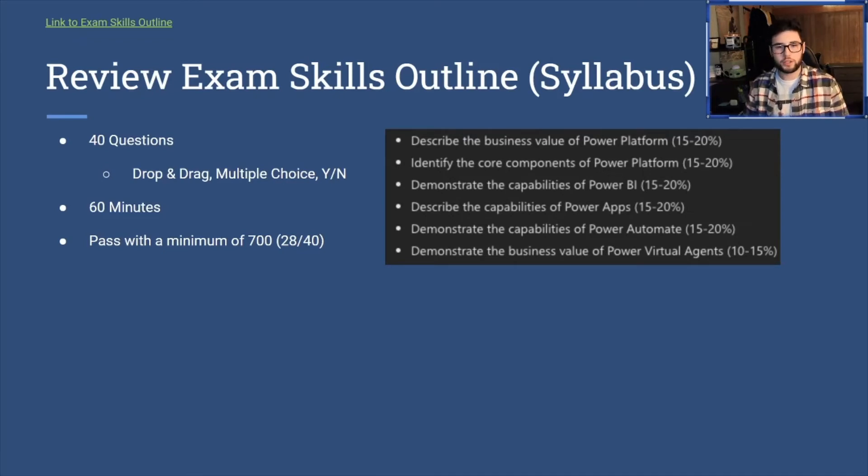there's about 40 questions, some are drop and drag, some are multiple choice, some are yes and no. It's about 60 minutes and you must pass with a minimum score of 700. So it's 28 out of 40, not totally sure how the scoring works. I don't know if you need to get the whole question right. Like get two out of three questions or answers correct within one question. Don't know if you get points for it, but it's highly possible.